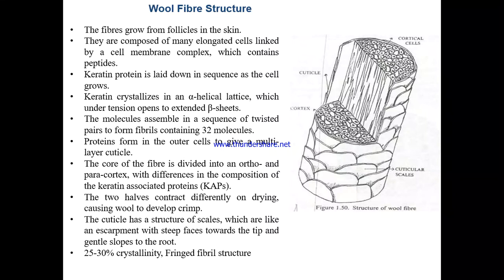The ortho cortex and para cortex contract dissimilarly on drying due to differences in the composition of keratin-associated proteins (KAPs). This differential contraction causes the crimp in wool fiber, giving it its natural waviness. The cuticle has a structure of scales arranged unidirectionally — steep faces toward the tip and a gentle slope toward the root. Rubbing from root to tip produces less friction; rubbing tip to root produces higher friction — this differential friction effect (DFE) causes the felting of wool fiber. Wool fiber has only 25–30% crystallinity and a fringe fibril structure.